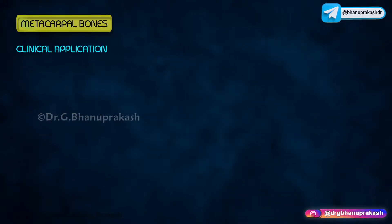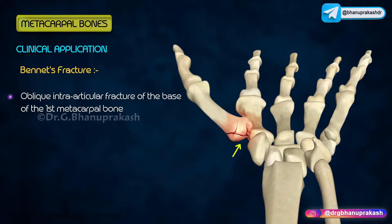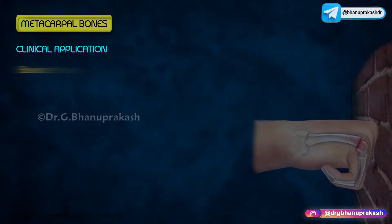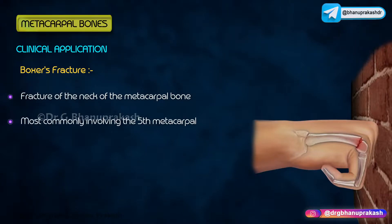Clinical Application - Bennett's Fracture: It is an oblique intra-articular fracture of the base of the first metacarpal bone and may be associated with a dislocation or subluxation of the bone. Boxer's Fracture: It is a fracture of the neck of the metacarpal bone, most commonly involving the fifth metacarpal.